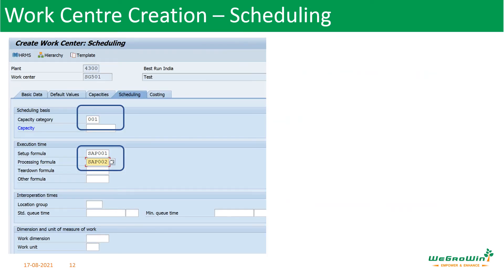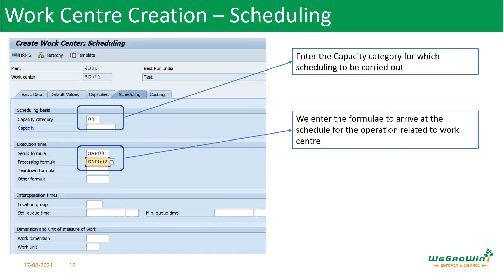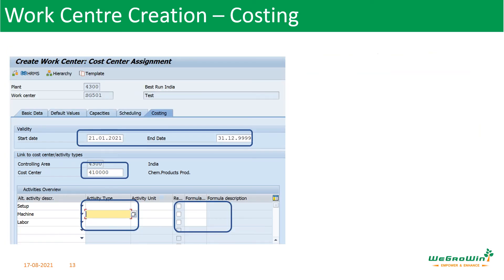Now let us enter the scheduling tab. In the scheduling tab, we enter details like capacity category where the scheduling has to be carried out, and then the formulas required for scheduling activities — such as SAP001 for the setup formula and SAP002 for the processing formula.